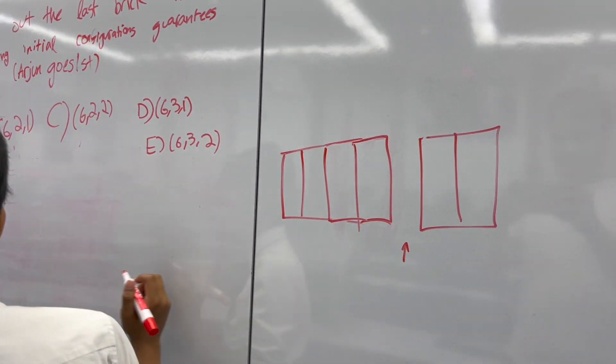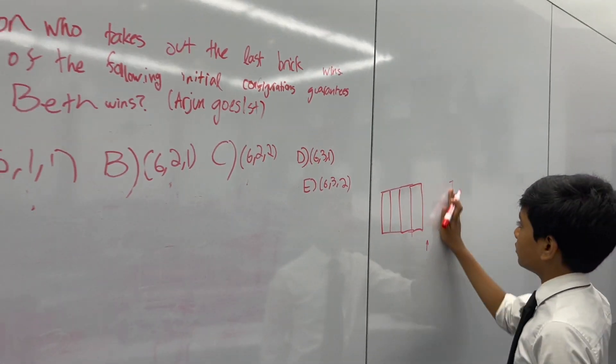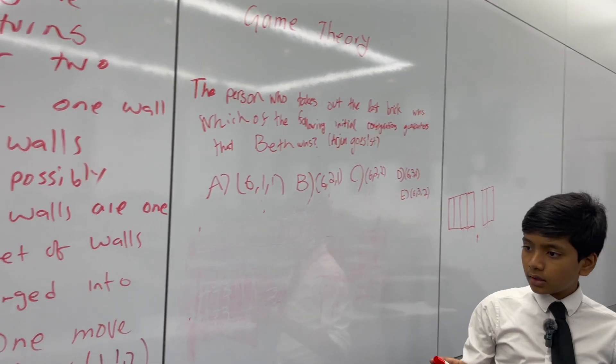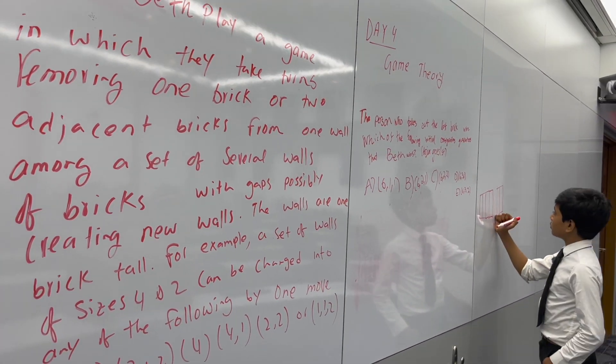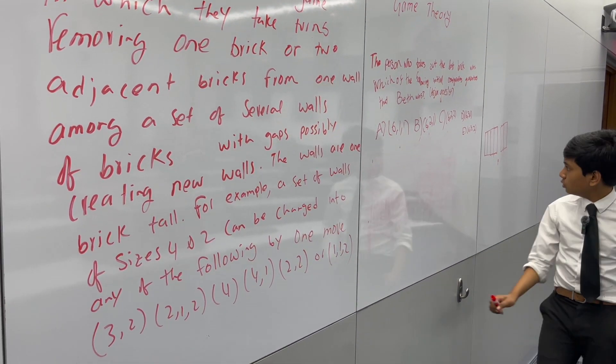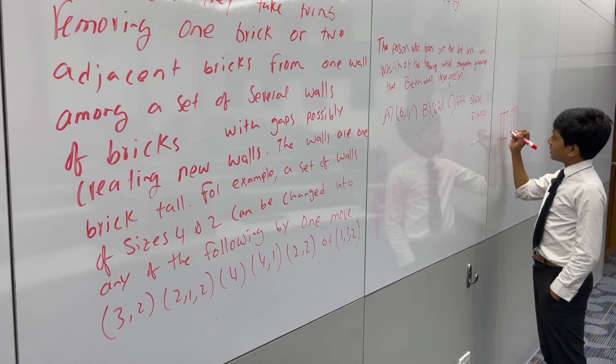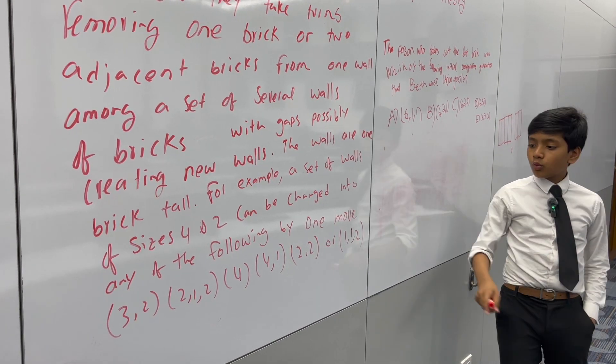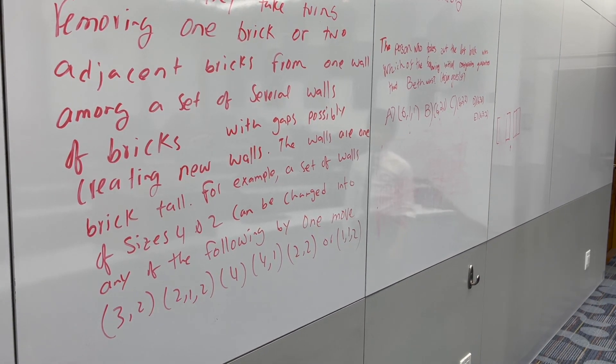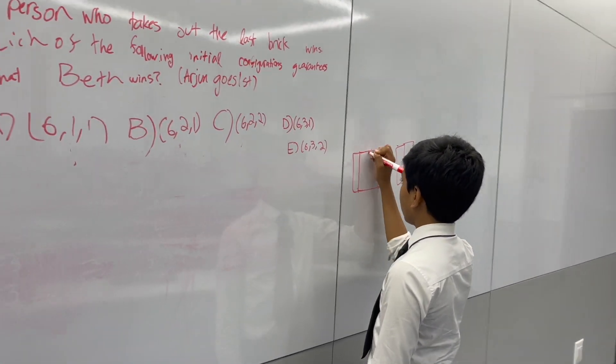Another possible configuration would be 4-1, if they removed these two consecutive bricks. Another one would be 4-1, if they just removed one of these two bricks. Another one would be 2-2 if they removed two of these adjacent bricks. Or 1-1-2 if they removed these middle two adjacent bricks. Those are all the configurations possible.